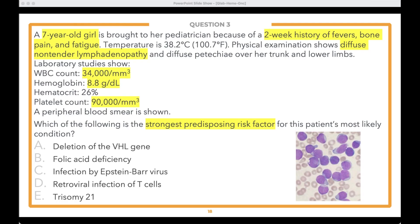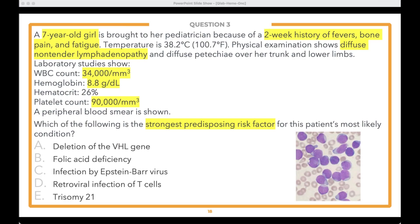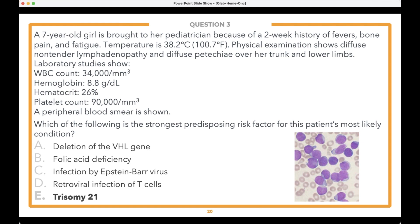Once again we've got a strong leader — trisomy 21 with over half the votes, about a quarter going with Epstein-Barr virus infection, and some choosing deletion of the VHL gene. Let's reveal the answer: the answer is E — trisomy 21! This has been a great crowd — three for three. If there was something confusing about this one, that's okay — Abraham will walk you through it.